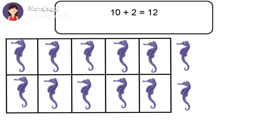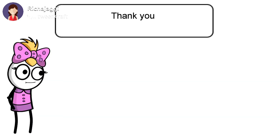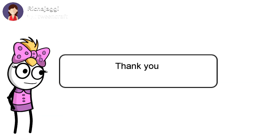And to find out its total, we will count all of them. 1, 2, 3, 4, 5, 6, 7, 8, 9, 10. 10 seahorse in the box. 11, 12. So 10 plus 2 is equal to 12. Thank you.